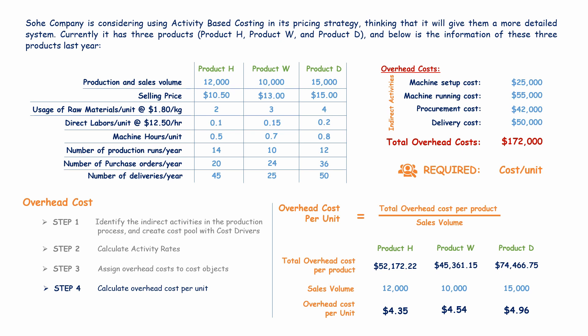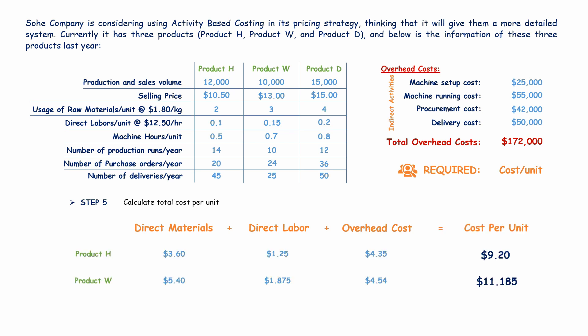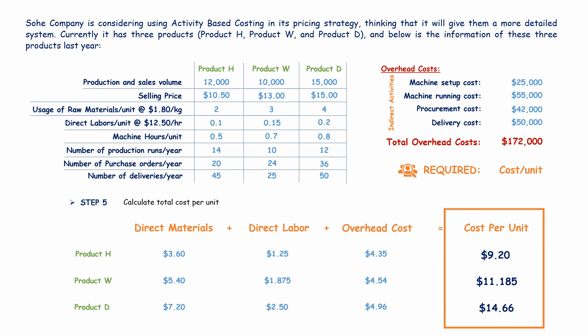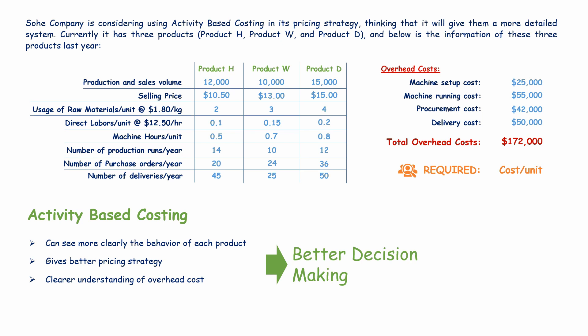With the overhead cost per unit calculated, we can now find the total cost of each product by adding the direct materials and direct labor costs calculated previously to the overhead cost per unit. We can make a summary table showing the total cost of each product. With activity-based costing, we can see more clearly the behavior of each product, giving us a better pricing strategy, a clearer understanding of overhead costs, and better decision making. We can identify products where we can reduce overhead costs or increase production volume to take advantage of profitability.